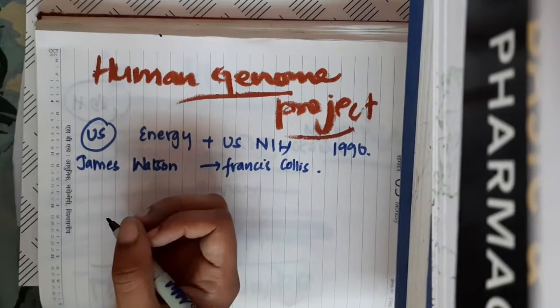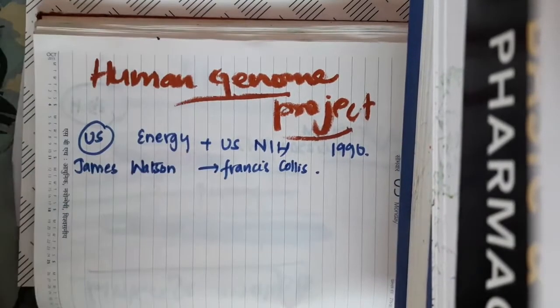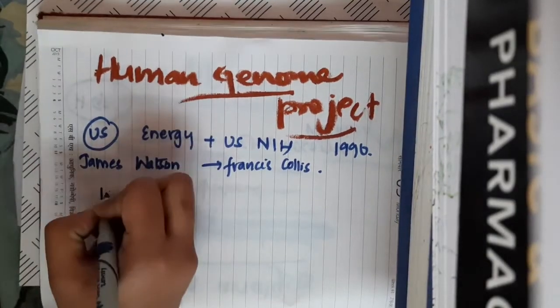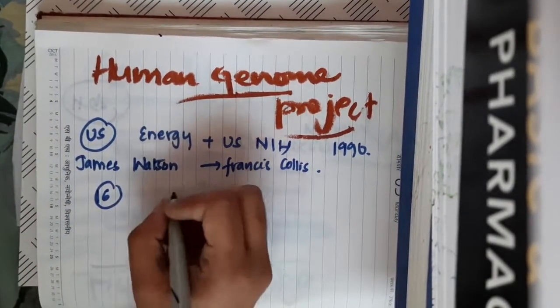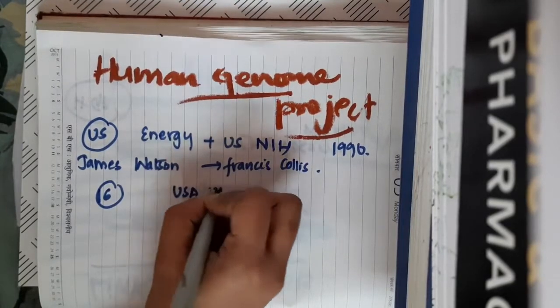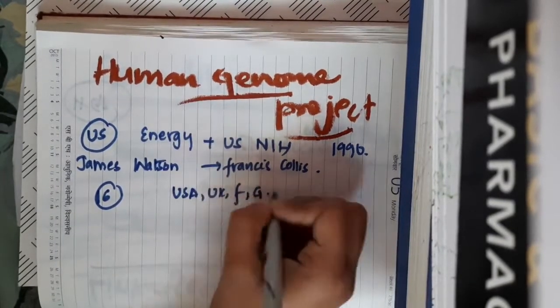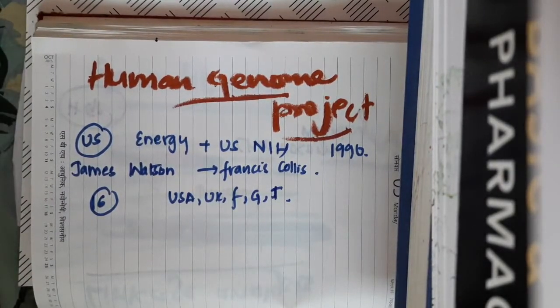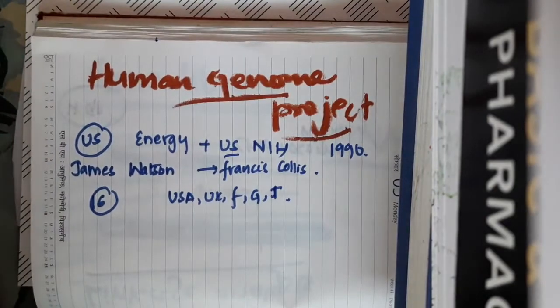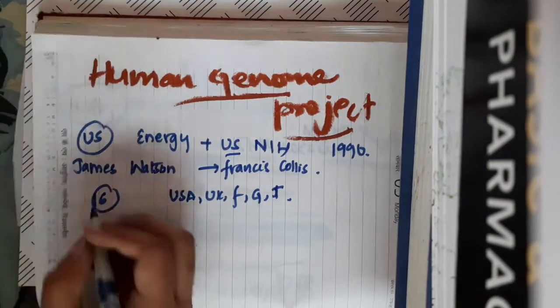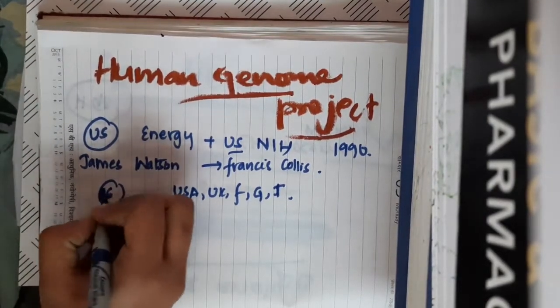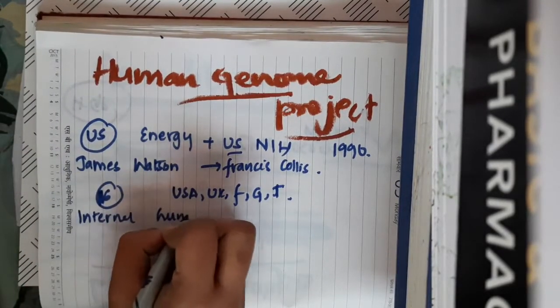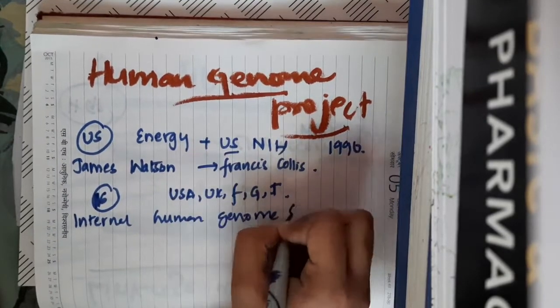Later, Francis Collins succeeded him and led the project. In this project, there are hundreds and thousands of scientists who have worked all over the world in 16 centers, mostly from USA, UK, France, Germany, and Japan. Because it is not just in one country but many countries participated in this human genome project, they have named this project as International Human Genome Sequencing Consortium.